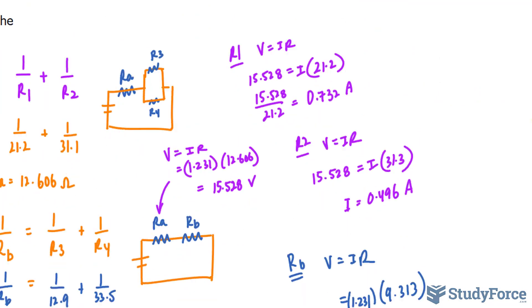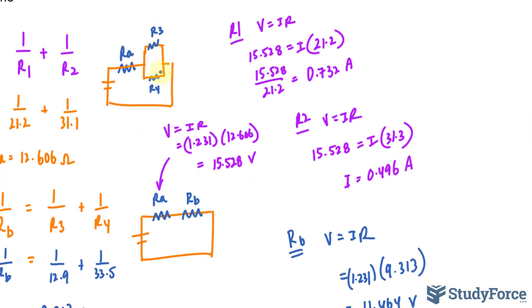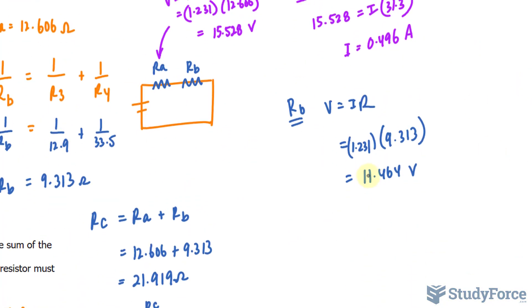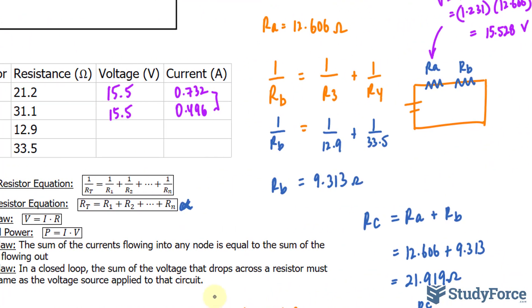Remember, RB, if we look back, consisted of R3 and R4. The voltage of 11.464 will be the voltage for both R3 and R4 because they are in parallel. Well, let me write that down. 11.464 rounds to 11.5. 11.5 and 11.5.